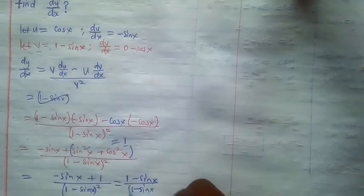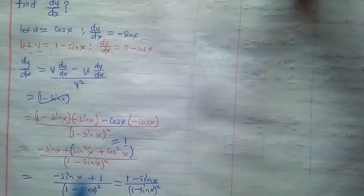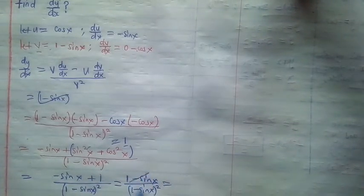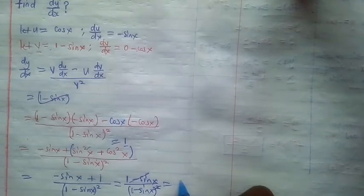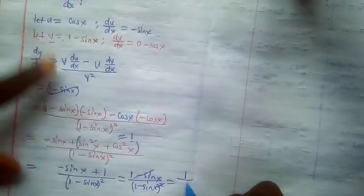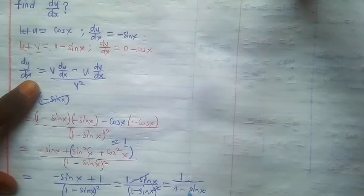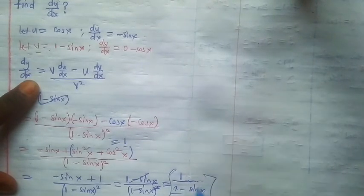Now at this point we can rearrange the denominator to have 1 minus sine x divided by 1 minus sine x squared. This single term cancels the square, and we're left with 1 divided by 1 minus sine x.